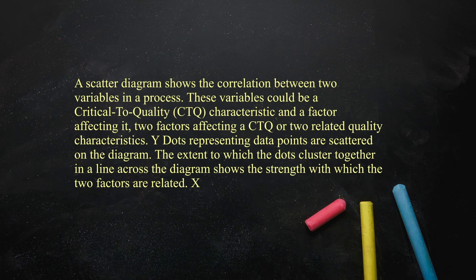These variables could be critical to quality characteristics and factors affecting it — two factors affecting critical to quality, abbreviated as CTQ, or two related quality characteristics. The dots represent data points scattered on the diagram, and the extent to which the dots cluster together in a line across the diagram shows the strength with which the two factors are related.